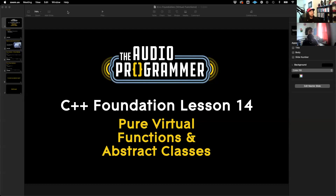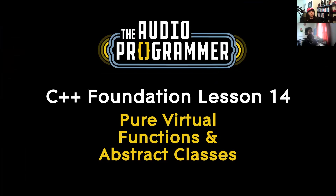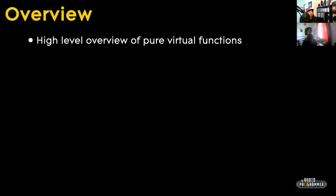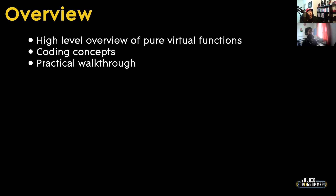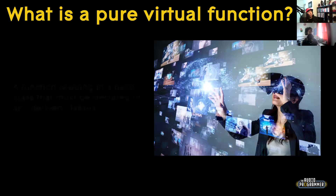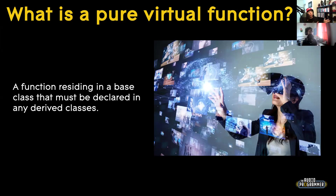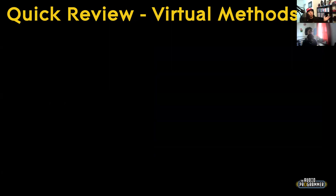I'm going to share my screen and we shall get started. This is lesson 14 about pure virtual functions and abstract classes. We're going to talk about what pure virtual functions are, coding concepts, and do a practical walkthrough. A pure virtual function is a function that resides in a base class that must — the keyword being must — be declared in any derived class.